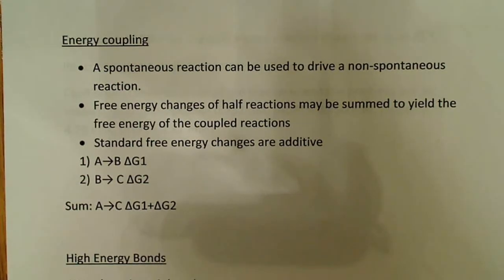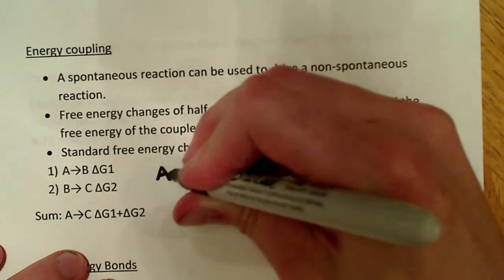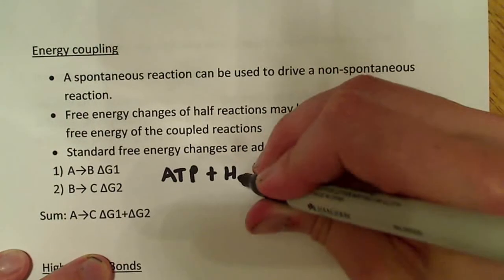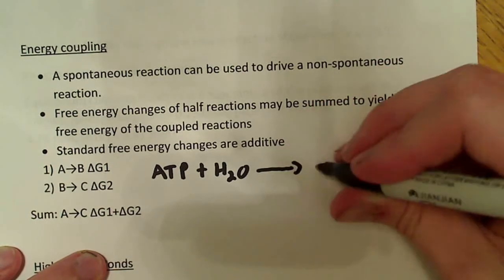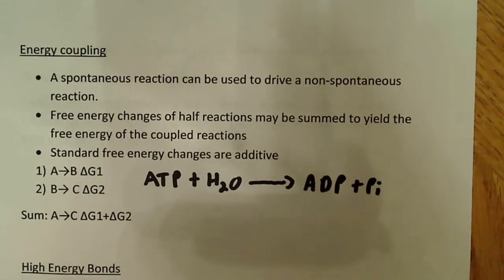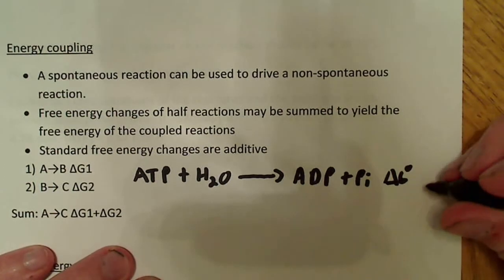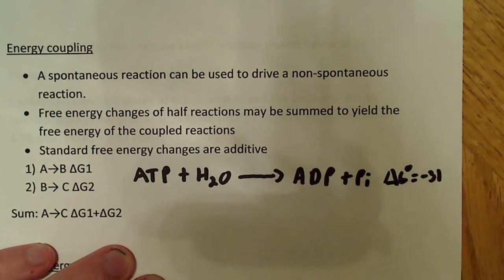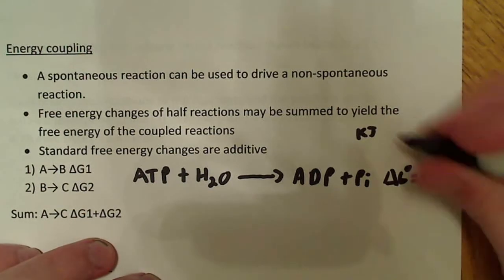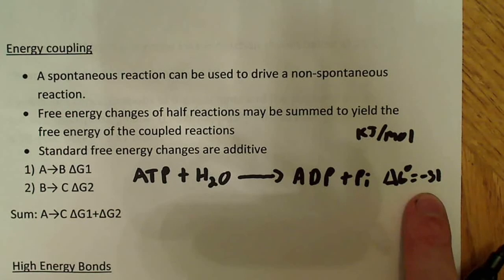What's an example of coupling? If we have ATP plus H2O going over to ADP plus inorganic phosphate (Pi), the standard free energy change here is equal to negative 31. The units — I'm going to use kilojoules per mole. So this is negative 31 kilojoules per mole.